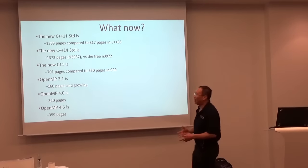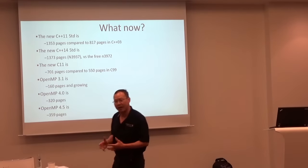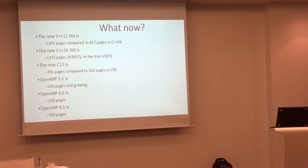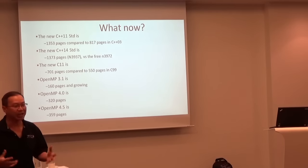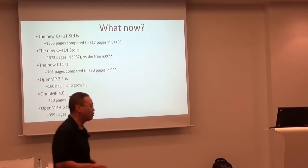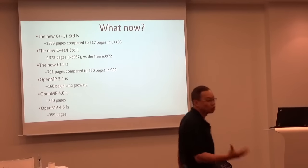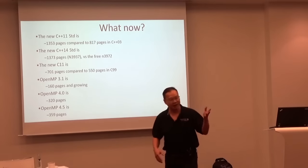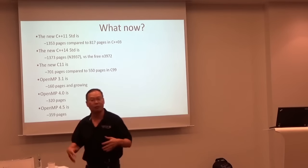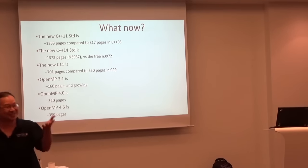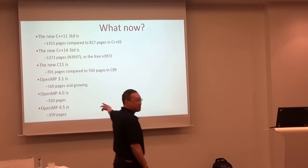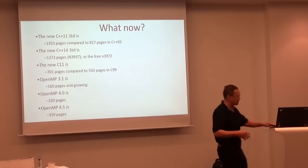You've got to stand back and ask: what now? The C++11 standard is 1,353 pages, and C++14 is about 20 more pages. C++17 will probably add another 200 pages — half of them mine for transactional memory, the other three-quarters probably concepts light. As you can see, OpenMP 4.5 is also growing by leaps and bounds.